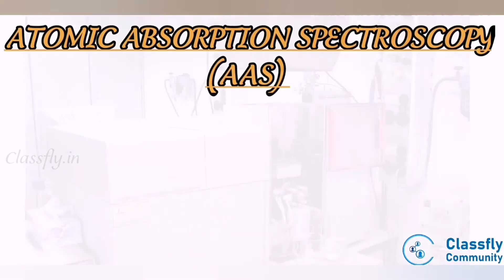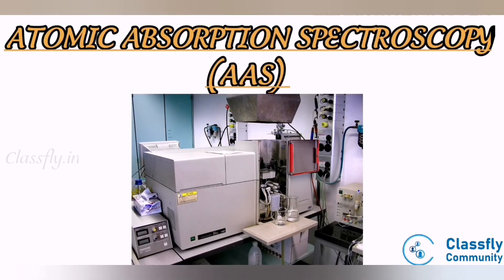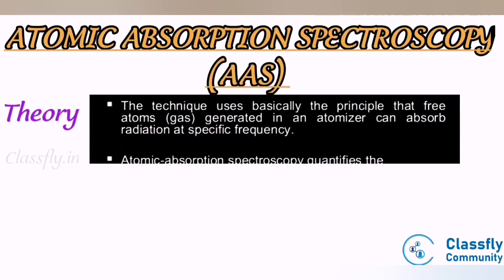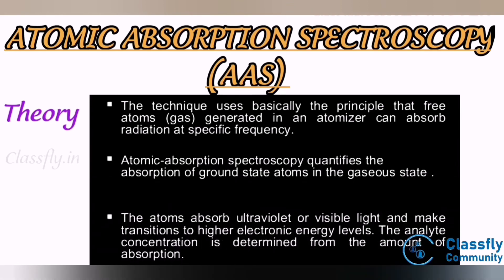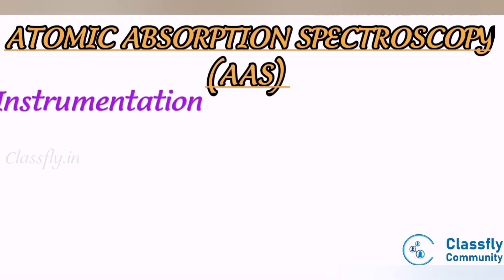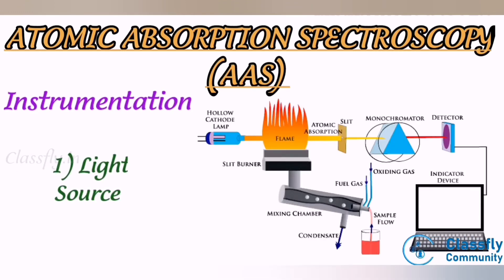Atomic absorption spectroscopy (AAS) is a very common technique for detecting metals and metalloids in a sample. It is reliable and simple to use, and can analyze over 62 elements. Theory: the technique is based on the principle that free atoms generated in an atomizer can absorb radiation at a specific frequency. AAS quantifies the absorption of ground state atoms in a gaseous state; the atoms absorb ultraviolet or visible light and transition to a higher electronic energy level.